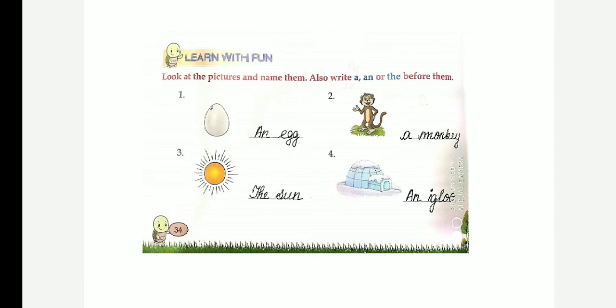The sun, why? We use 'the' here when the noun, 'the' is used when the noun is specific. The sun, an igloo. I, vowel sound, so we use 'an', an igloo. An egg, a monkey, the sun, an igloo. Children, so practice this. Next week your exam will start. Okay, learn properly. Thank you.